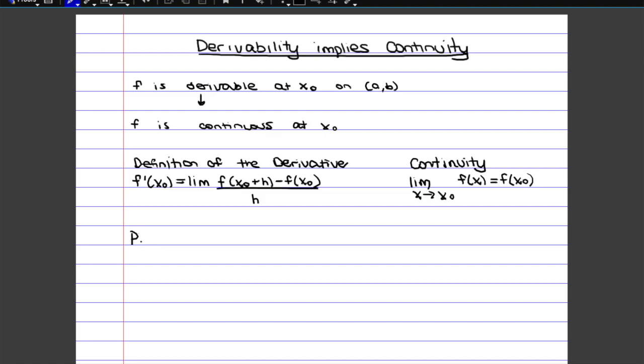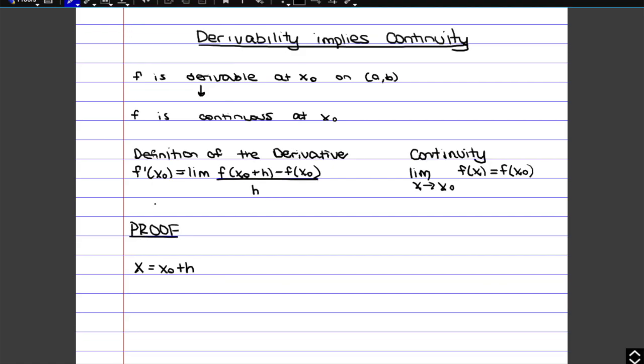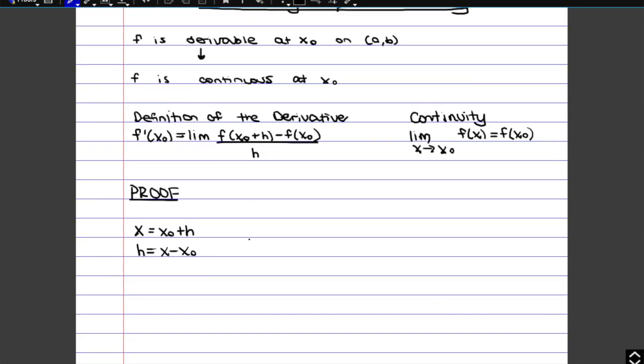For the proof we start off with the definition of derivative since we know that the derivative has to exist and by definition it has to be finite. We're going to rewrite it in a slightly different way: instead of using x0 and x0 plus h, we want to use x and x0 because that's the standard way of stating continuity. So we're going to say that x is x0 plus h, and then the difference h in the denominator is the difference between the x's, which would be x minus x0.